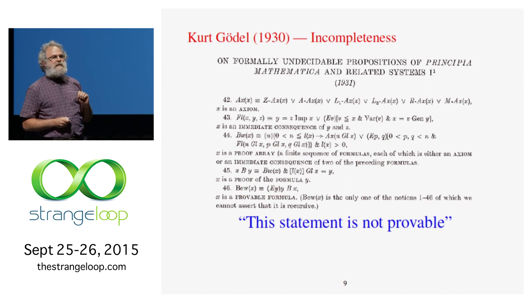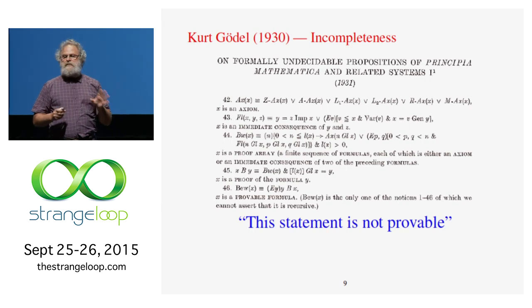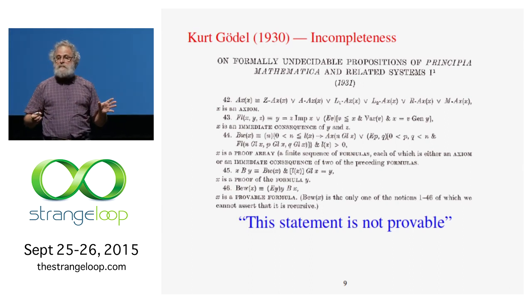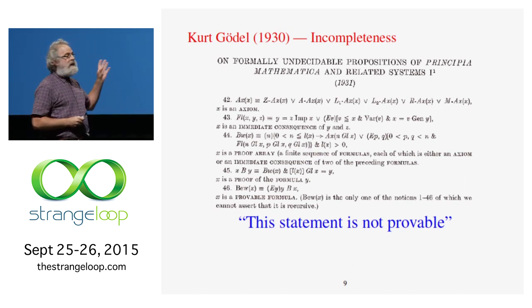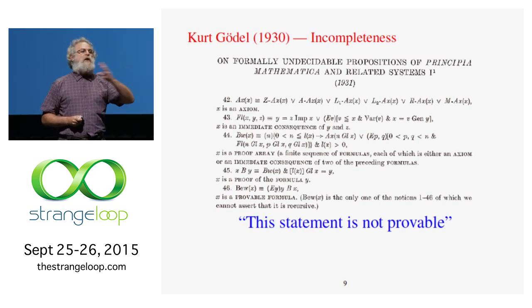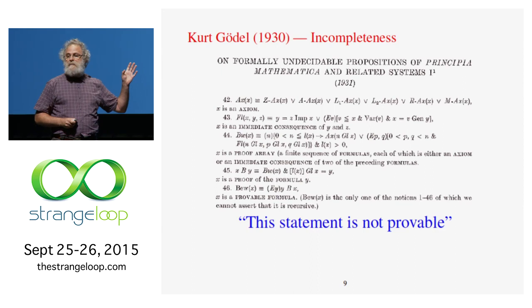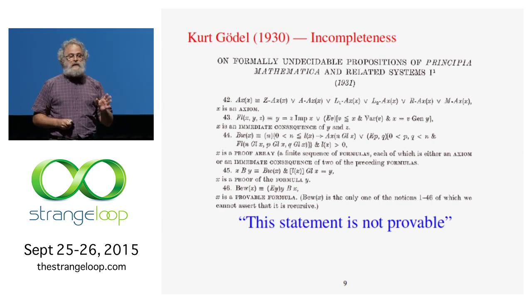Think about the statement "this statement is not provable." As soon as you have this written down, you are in trouble. It's very much like the liar's paradox, only now it's about provability. If it's false, then it is provable, and you've proved something that's false — really bad news. So the alternative is that it's true, but then you have a statement that is true but not provable. Not as bad, but still really annoying, especially if you're Hilbert.